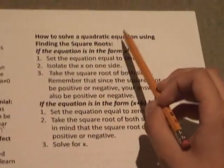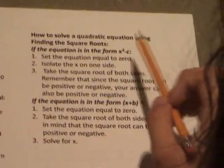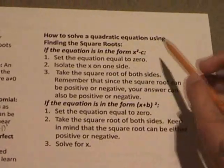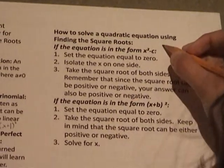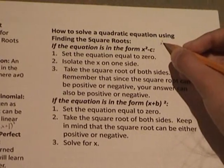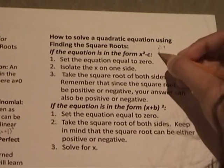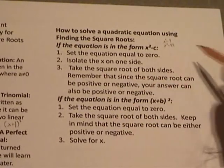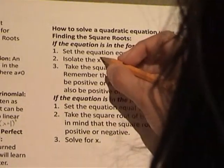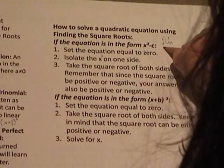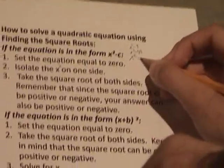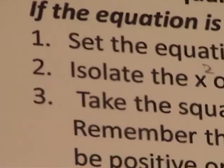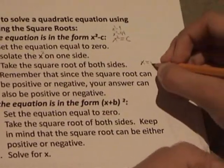The way to solve a quadratic equation by finding square roots is, if the equation is in this form x squared minus c, such as x squared minus 9 or x squared minus 49, isolate the x squared on one side so it would become x squared equals c, and take the square root of both sides.